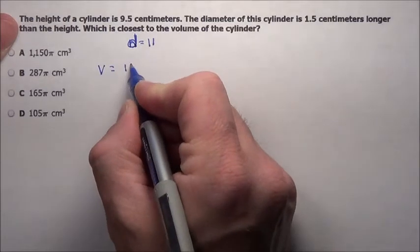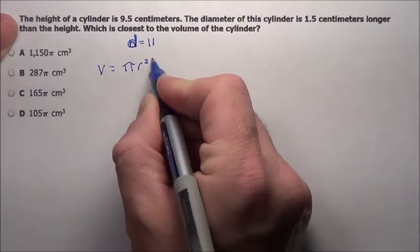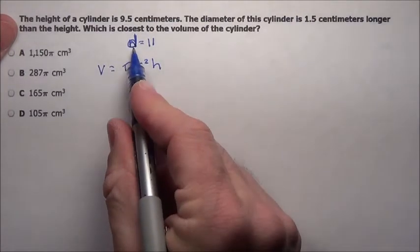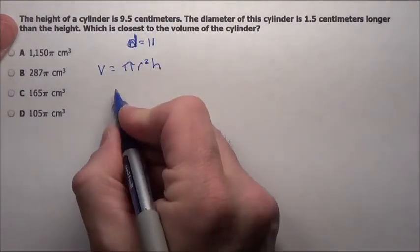Formula for volume: pi r squared times the height. That's all it is for a cylinder. Notice it's a radius, though they gave us diameter. No big deal.